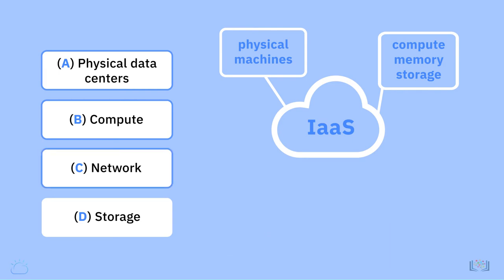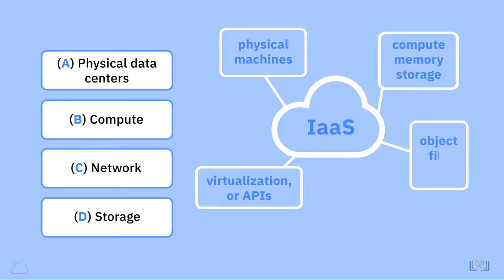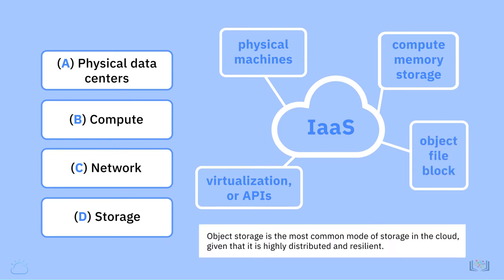Network: Users get access to networking resources on the cloud through virtualization or programmatically through APIs. Storage: There are three types of cloud data storage — object, file, and block storage. Object storage is the most common mode of storage in the cloud, given that it is highly distributed and resilient.